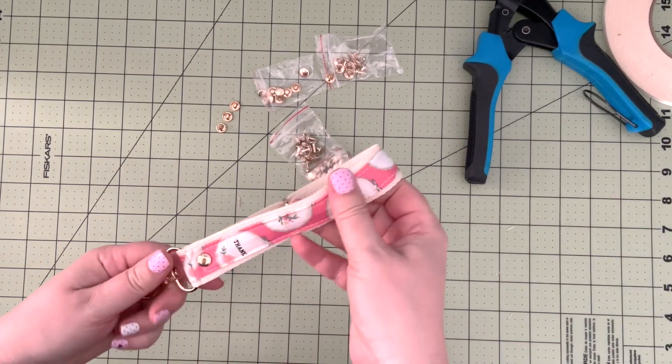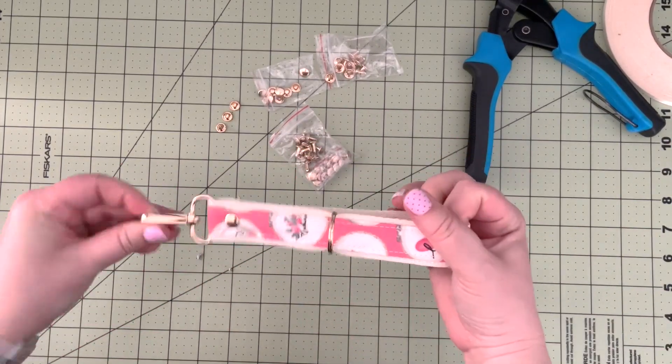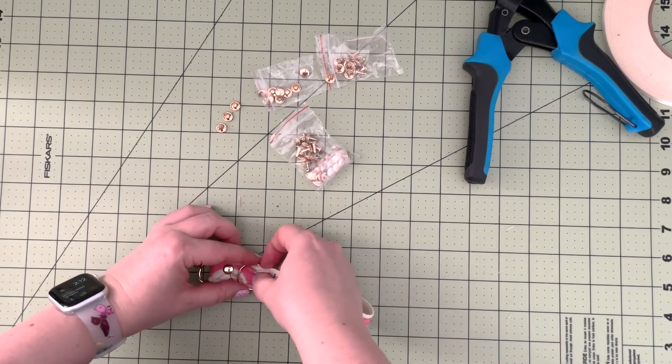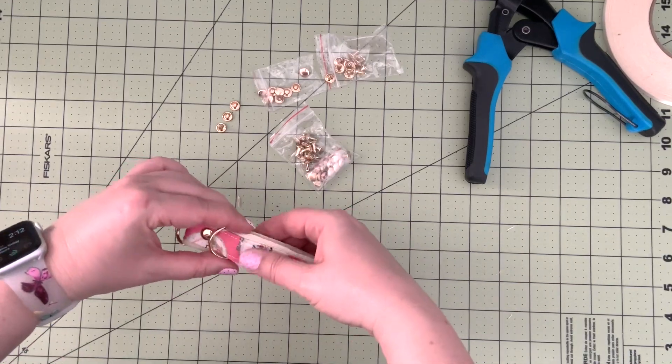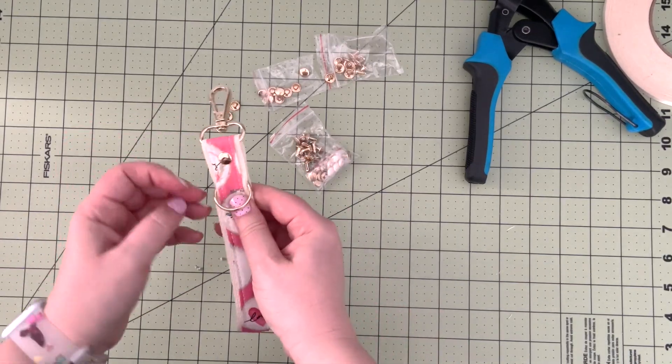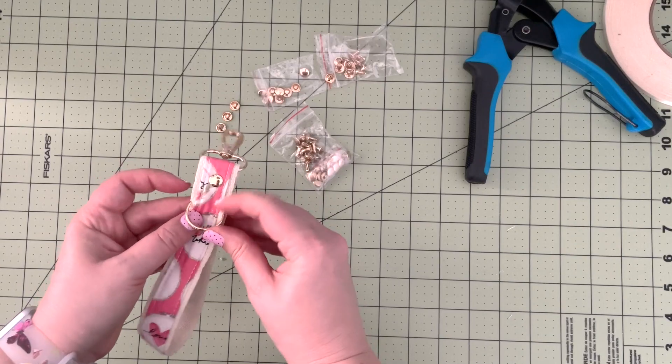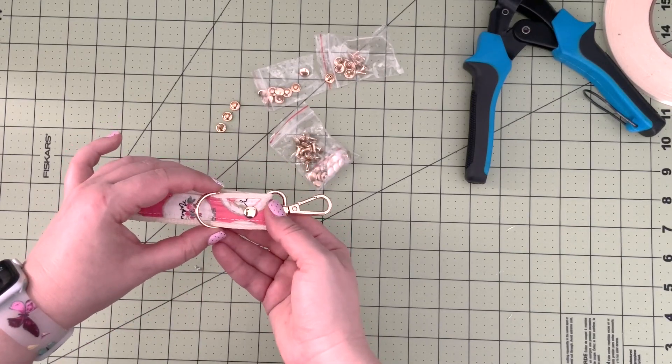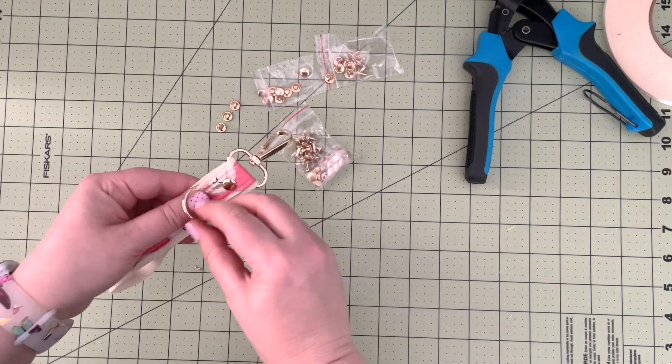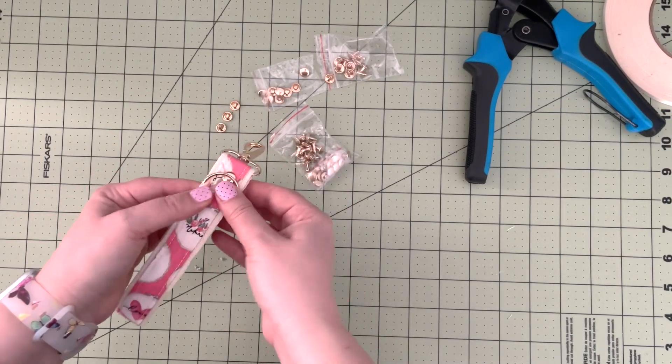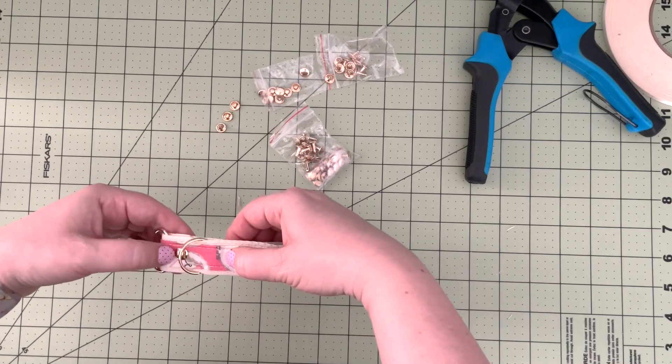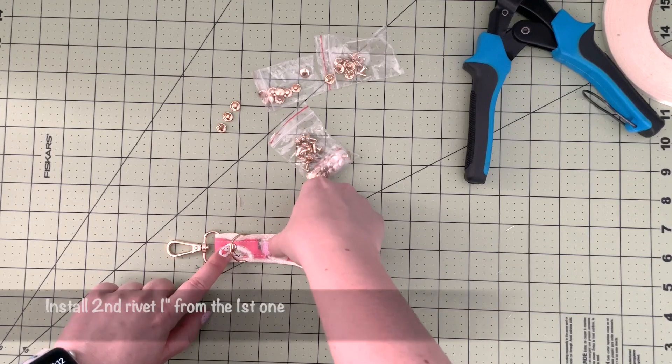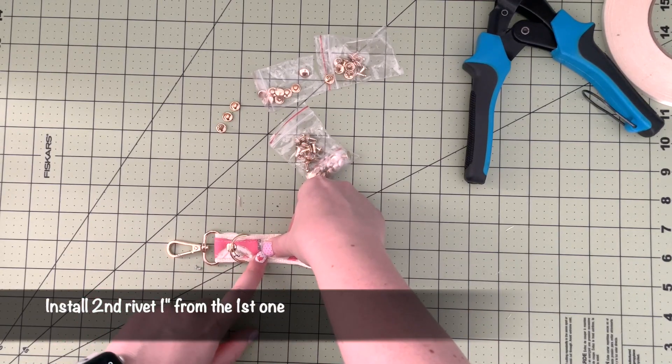That's how my swivel clasp is attached to my key fob. Now I'm going to make sure that my key ring is secured. You're going to bring your key ring down about a half inch or three-quarters of an inch down from the rivet, and about an inch from the first rivet you're going to punch another hole to attach.